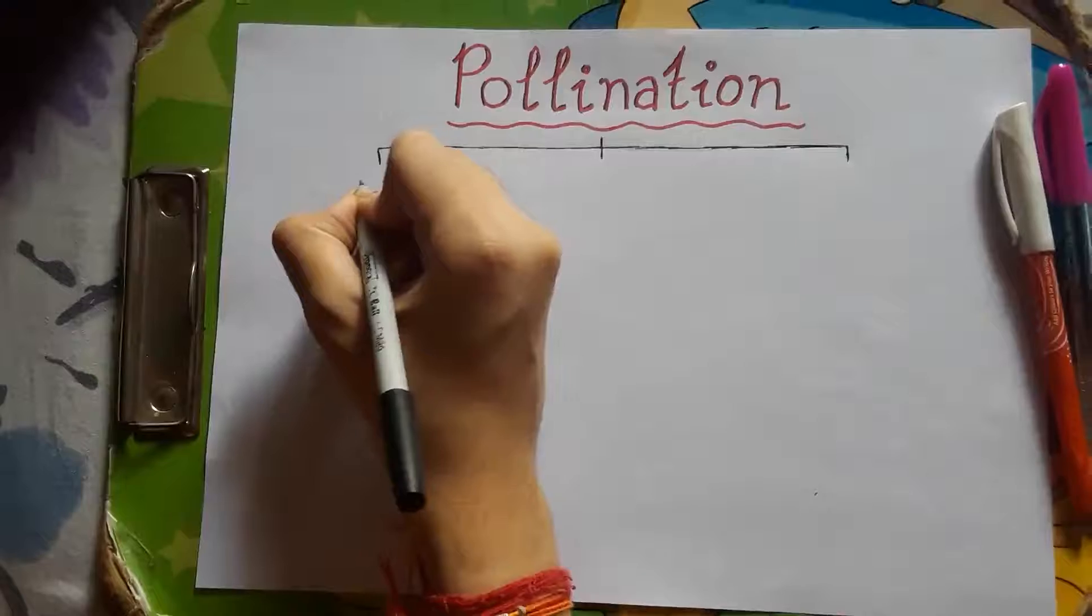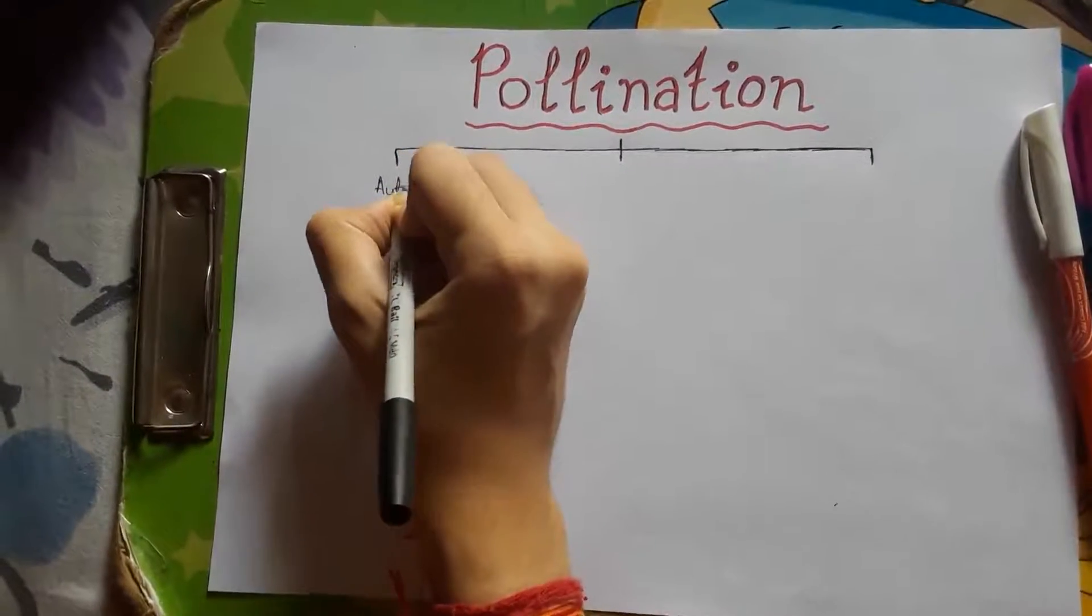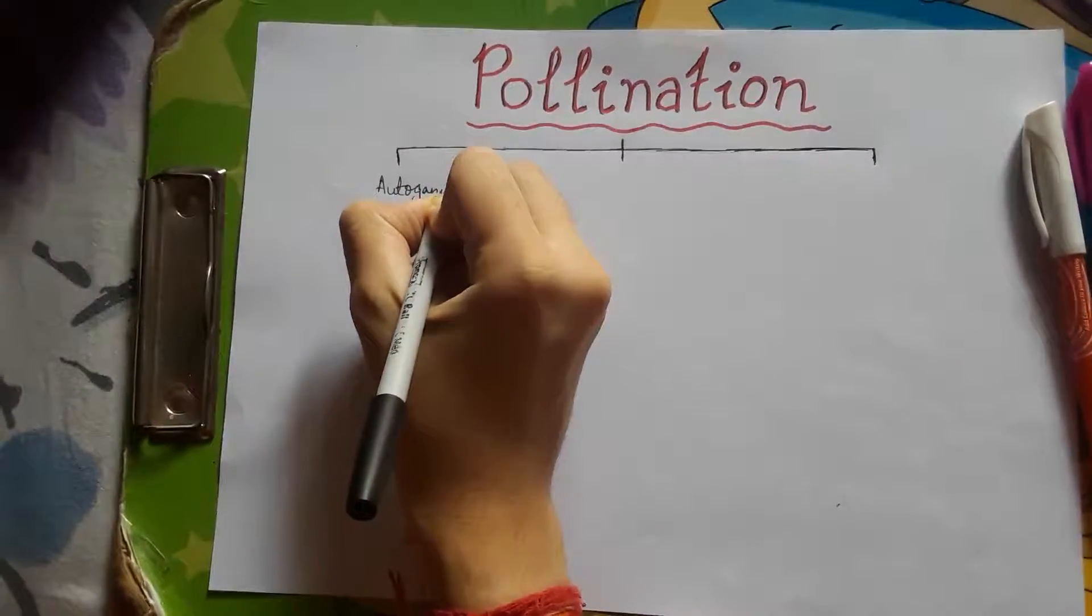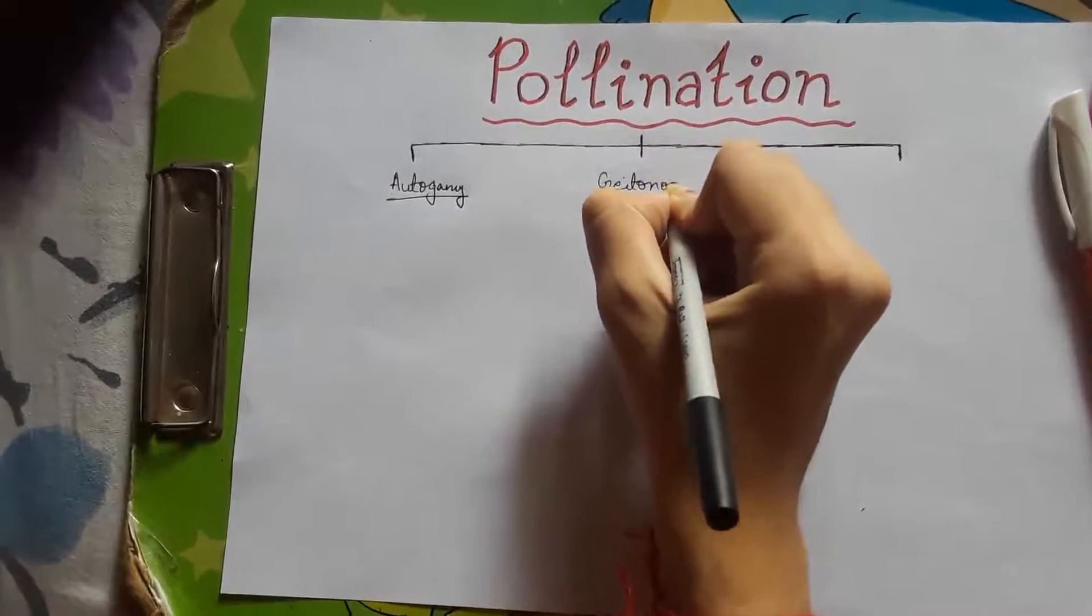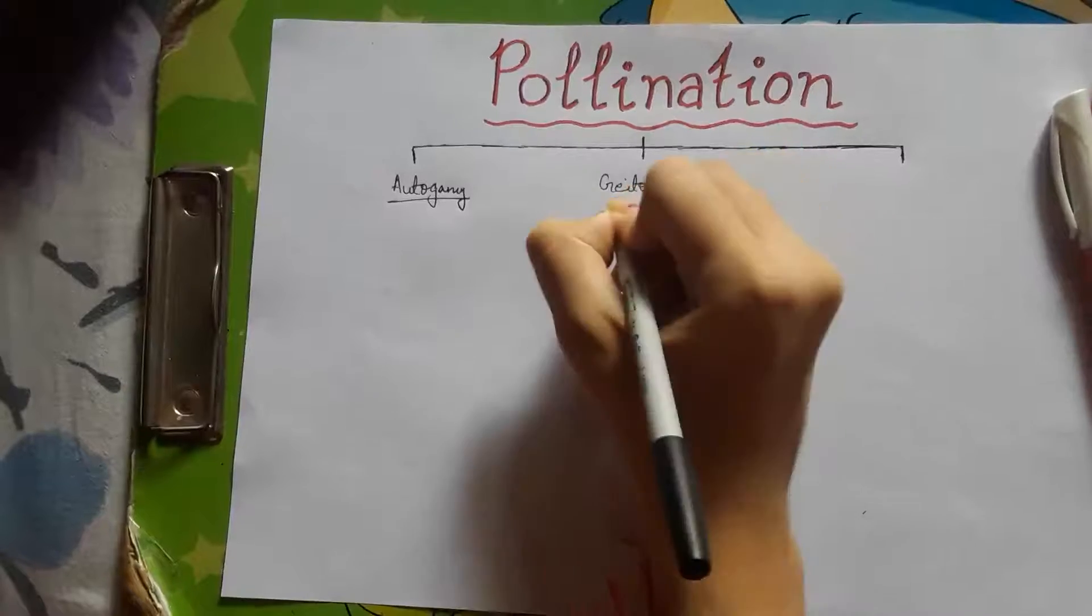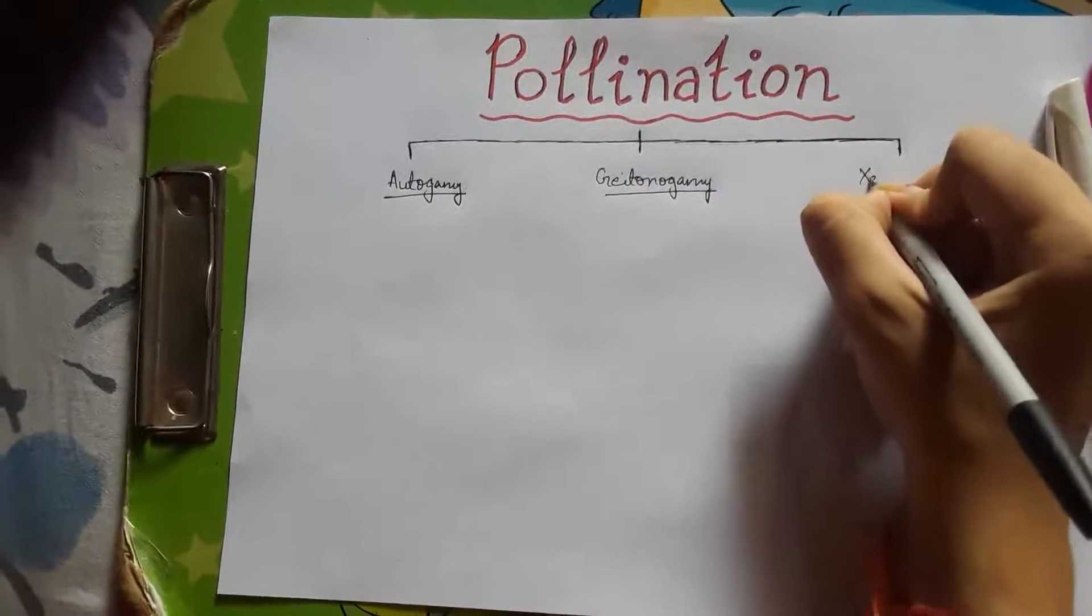It is of three types namely autogamy, geitonogamy, and xenogamy.